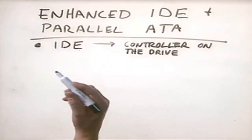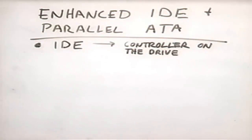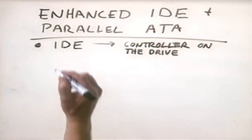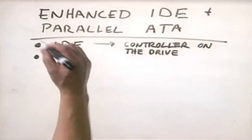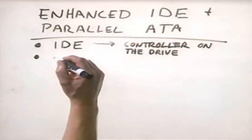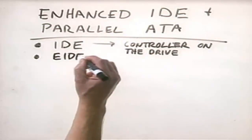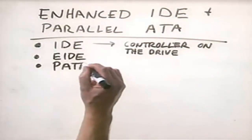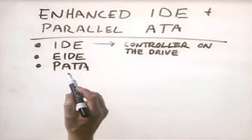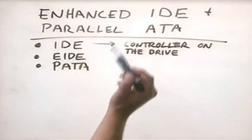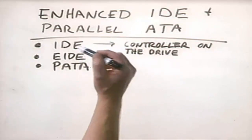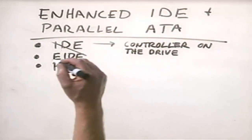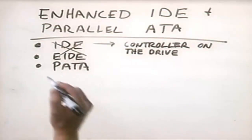The actual IDE standard was only implemented for a very short number of years. It had serious limitations — one of the key ones was the hard disk drive size limit of only a little over 500 megabytes, which is way too small. Over the years, newer versions were introduced: EIDE, which is called enhanced IDE, and PATA or parallel ATA. Parallel ATA is a newer updated version of enhanced IDE, which itself is an enhanced version of the original IDE.